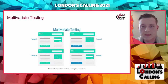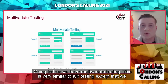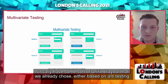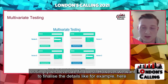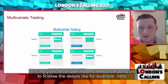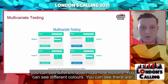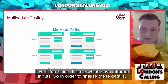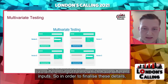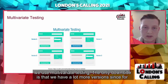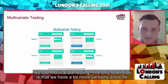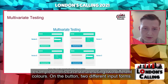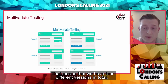Multivariate testing is very similar to A/B testing, except that we usually have a unified layout already chosen — either based on A/B testing or simply the best we've found — and we want to finalize the details. For example, you can see different 'Download Now' button colors, and two different input forms with different inputs. To finalize these details, we use multivariate testing. The downside is that we end up with many more versions — for example, testing two button colors and two input forms gives four versions in total.